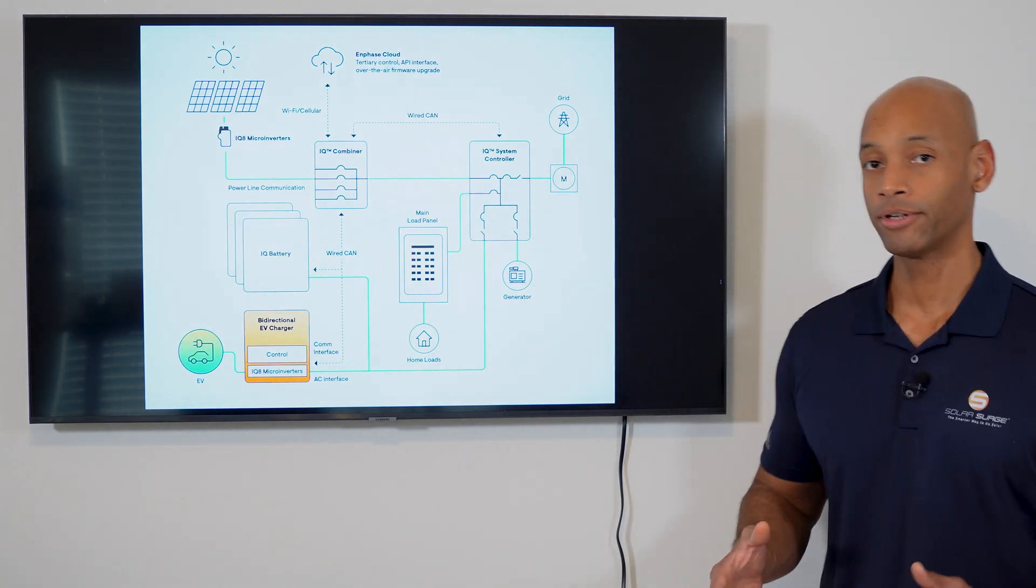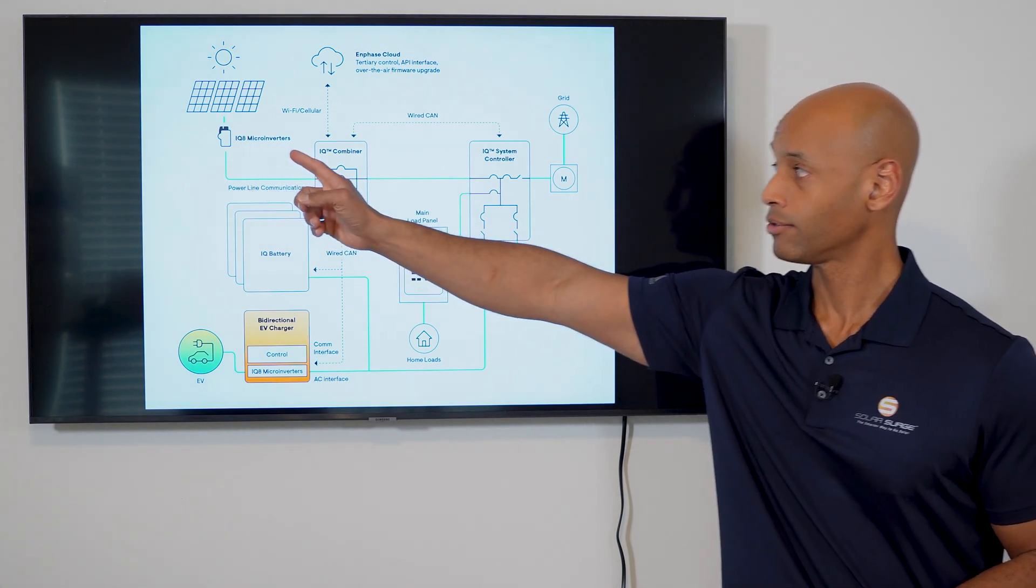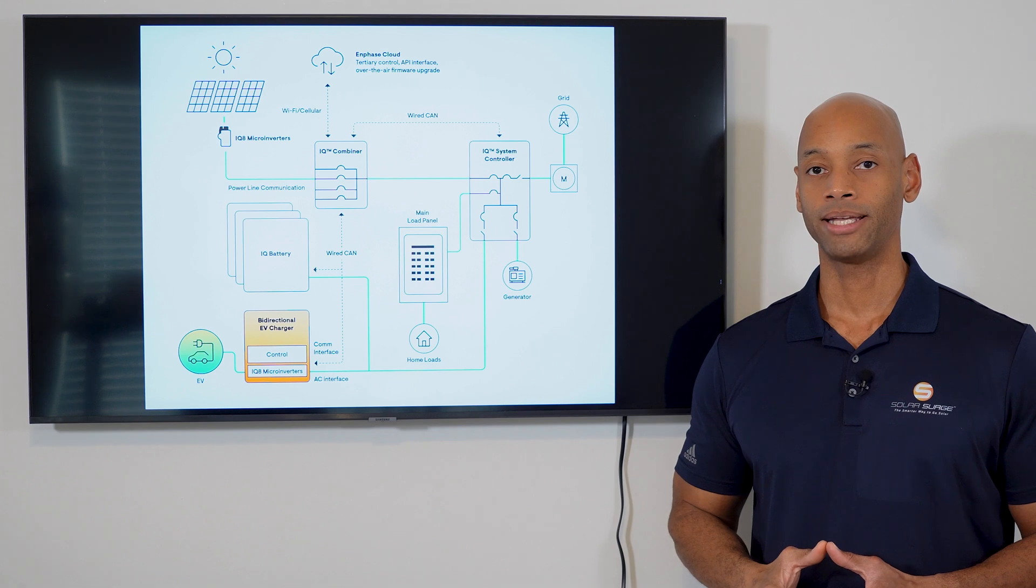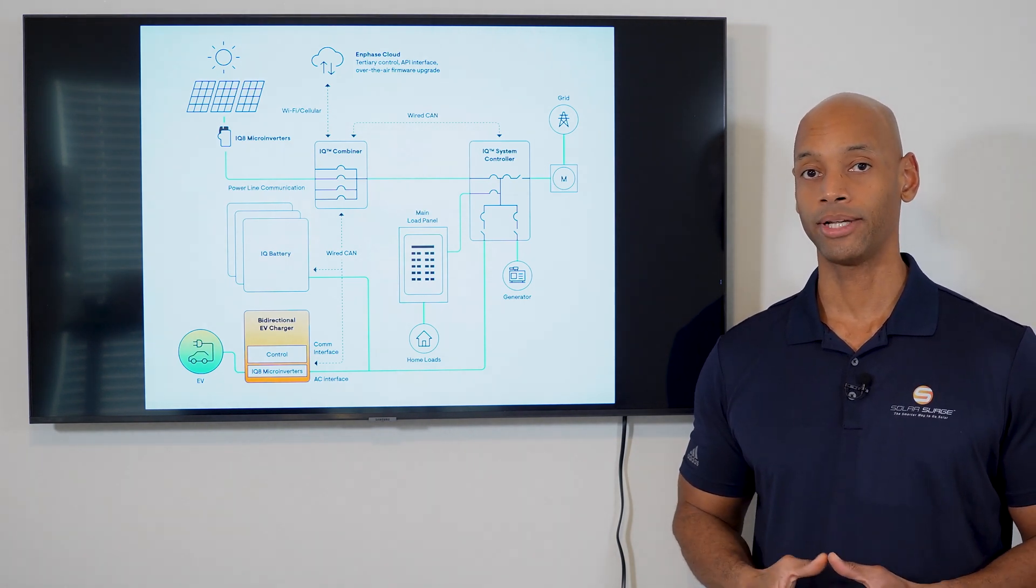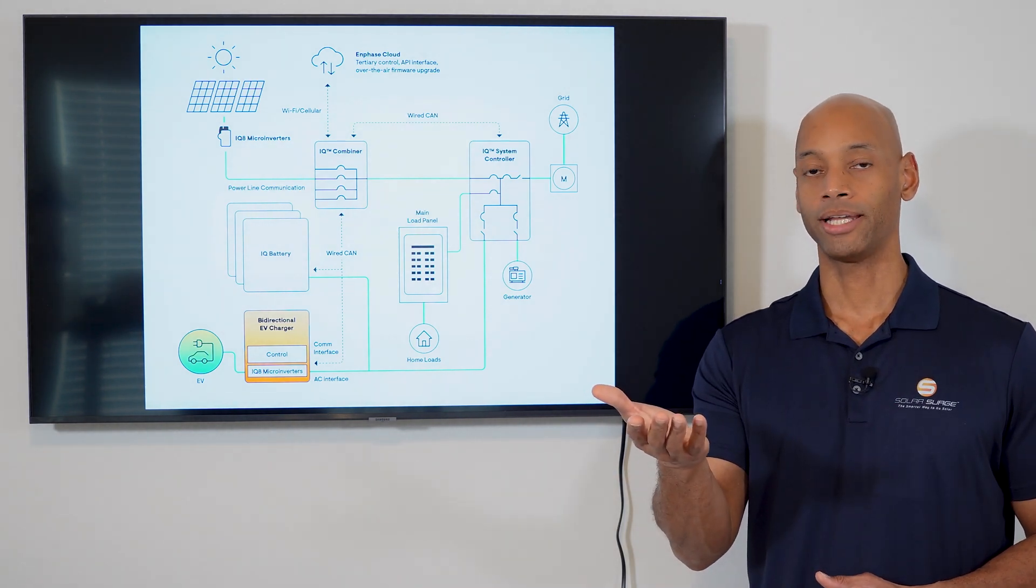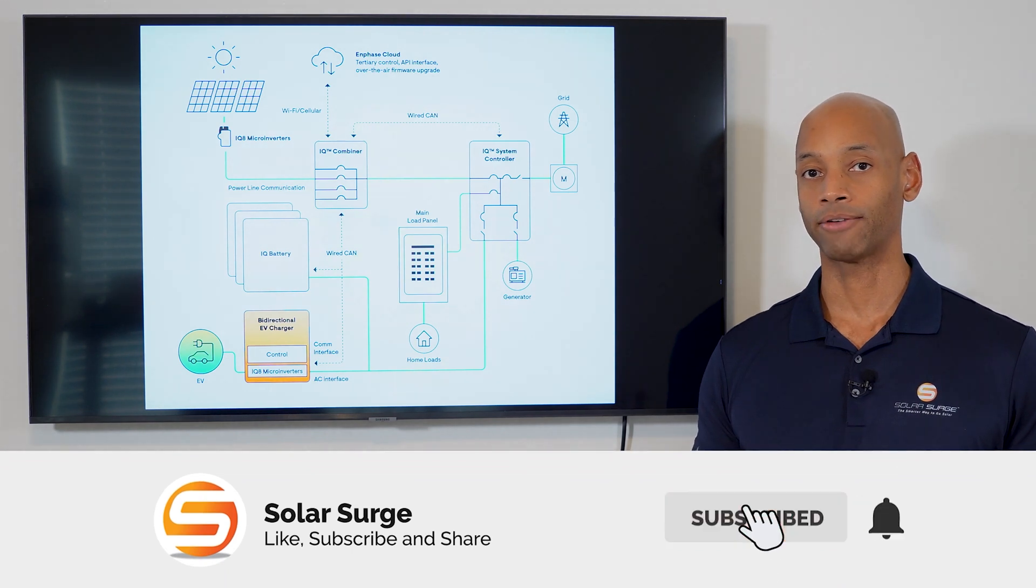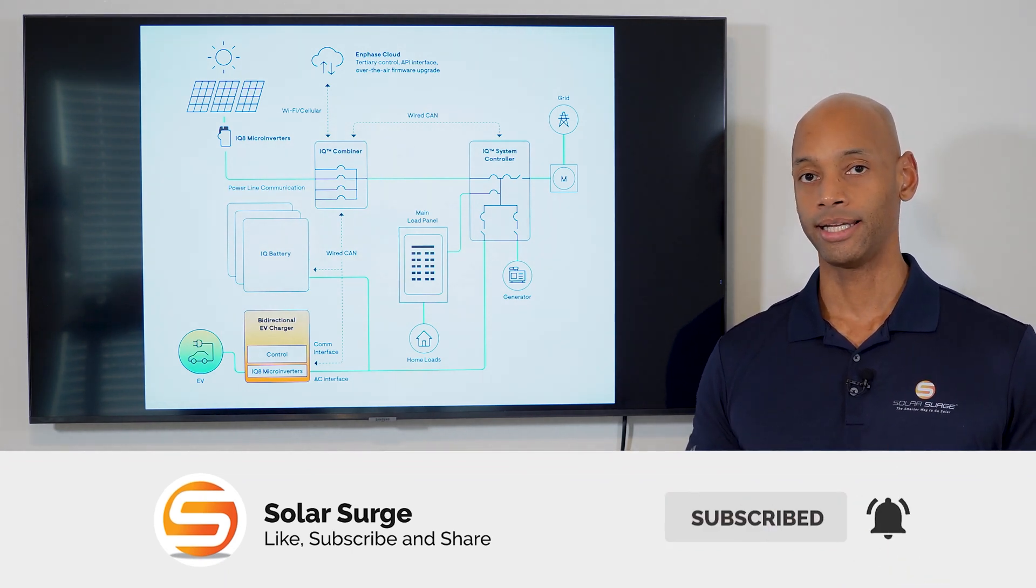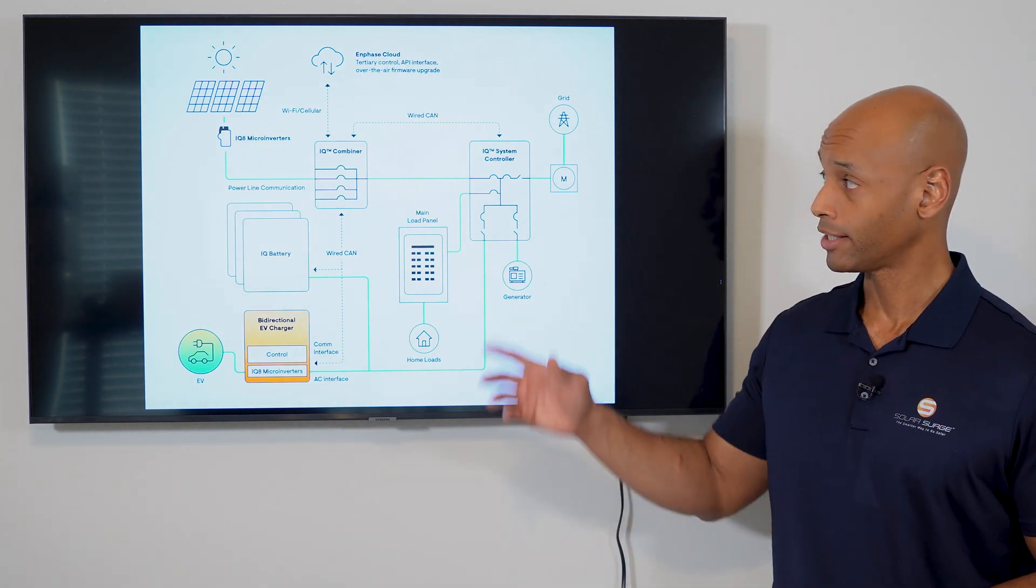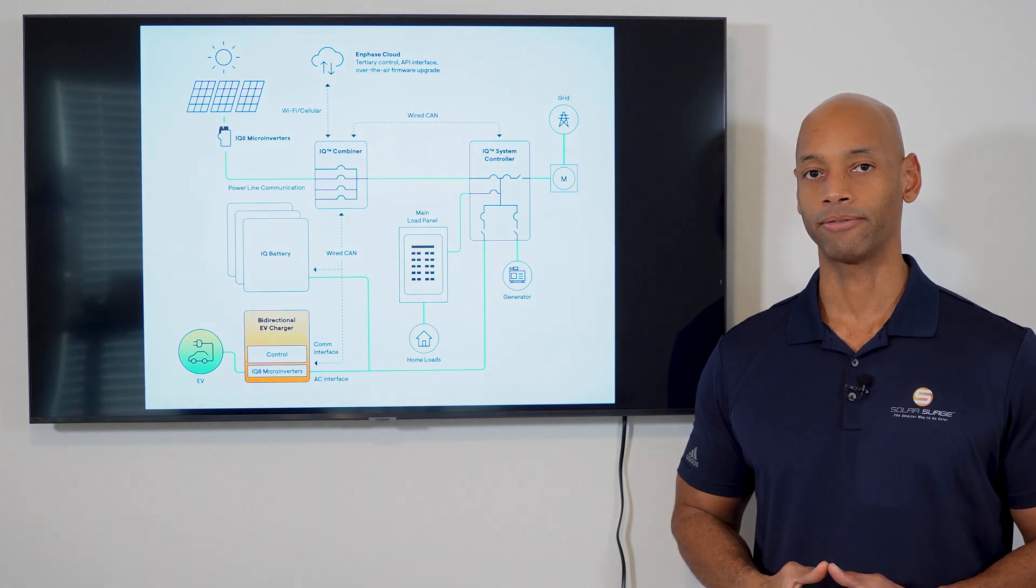It's the inverter system that does this function, and with Enphase they use what's called microinverters. What a microinverter means is that each solar panel has its own inverter device - a small device that installs underneath each solar panel. Instead of having one central unit at ground level that does DC to AC conversion for the entire system, with the Enphase architecture each individual solar panel has its own microinverter.